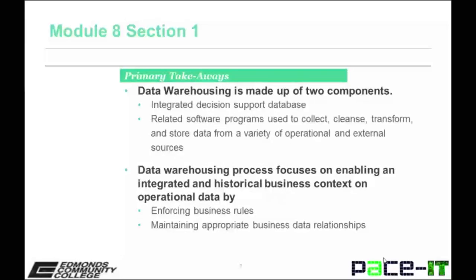Primary takeaways include the following. Data warehousing is made up of two components: an integrated decision support database, and related software programs used to collect, cleanse, transform, and store data from a variety of operational and external sources. The data warehouse process focuses on enabling an integrated and historical business context on operational data by enforcing the business rules and maintaining appropriate business data relationships.